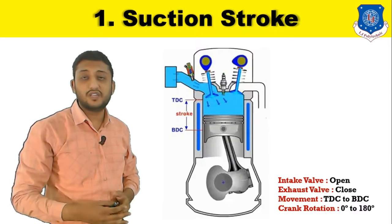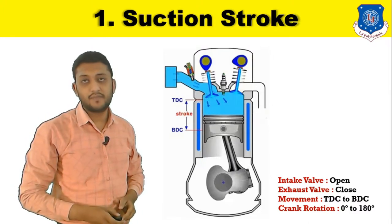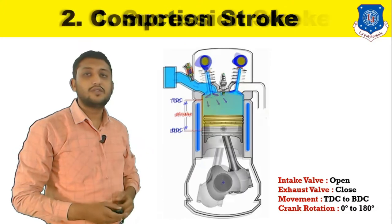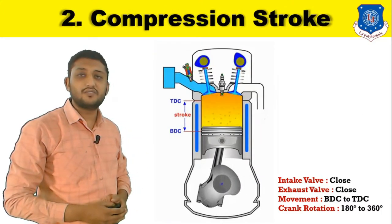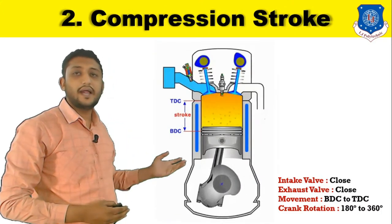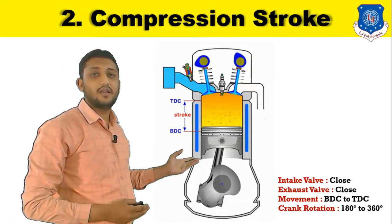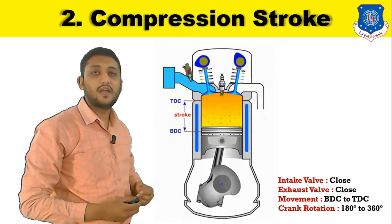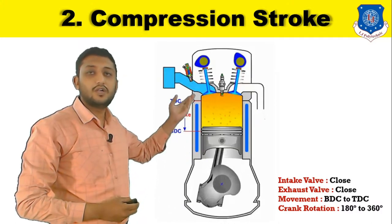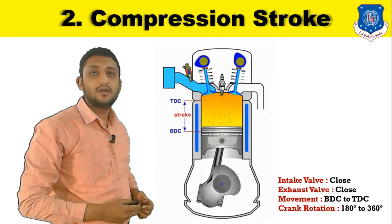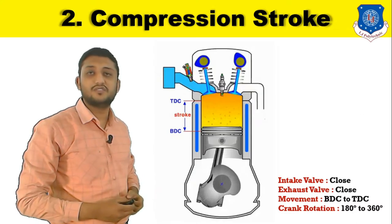During the suction stroke, the intake valve will be in open position and exhaust valve will be in closed position. The crank angle theta for this stroke is 180 degrees. Next is the compression stroke, in which the piston moves from bottom dead center to the top dead center. As the piston moves from BDC to TDC, the volume decreases inside the combustion chamber.